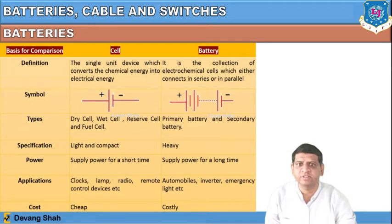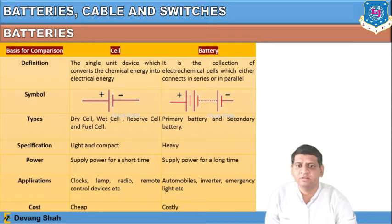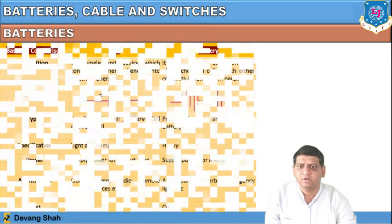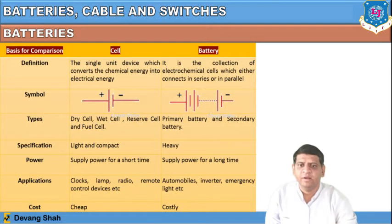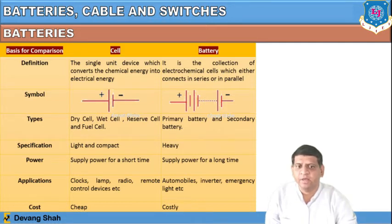You can see the symbol of a cell as well as the symbol of a battery. A battery is a collection of cells and has a higher capacity. Types of cells include dry cell, wet cell, reserve cell, and fuel cell. Types of batteries are defined as primary battery and secondary battery. Cells are light and compact, while batteries are heavy. A cell supplies power for a short time, whereas a battery supplies power for a longer time.